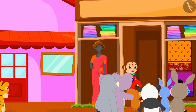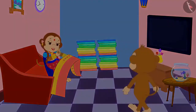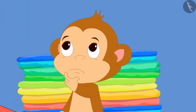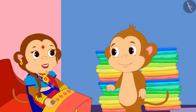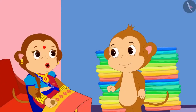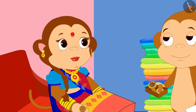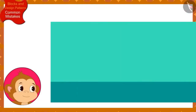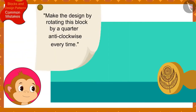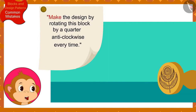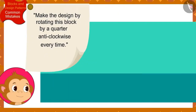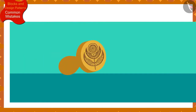Banno's sarees shop is going very well. Every day, seeing Banno making designs on so many sarees, Babban thought why not give Banno a little help? I will write the rules of the pattern you need to make on the sarees on a piece of paper for you. You only need to use these blocks and make the designs according to that rule, Banno told Babban. Babban has to make the design using this block according to this rule on the first saree: make the design by rotating this block by a quarter anti-clockwise every time. Babban read the instructions and quickly made his design.